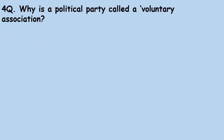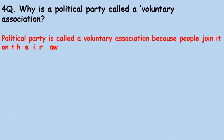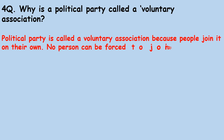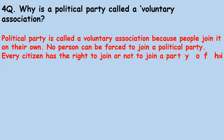Why is a political party called a voluntary association? A political party is called a voluntary association because people join it on their own. No person can be forced to join a political party. Every citizen has the right to join or not to join a party of his or her choice.